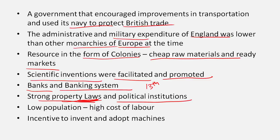Strong property laws and political institutions also helped. Property law in England was favorable towards industrialists — if you set up a factory and invested in machines, the government would protect those assets and they could not simply be taken from you. England had a parliament for many centuries, so industrialists could lobby parliament to make laws favorable to their industries. Other countries were absolute monarchies where no such lobbying was possible — which is why China and India could not have an Industrial Revolution.